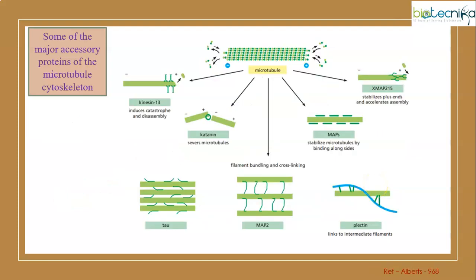Kinesin 13 and Exmap 215 both have opposite functions - their target is the same plus end. But Kinesin 13 helps in disassembly, that is catastrophic event, whereas Exmap 215 accelerates assembly, which we call a rescue event.